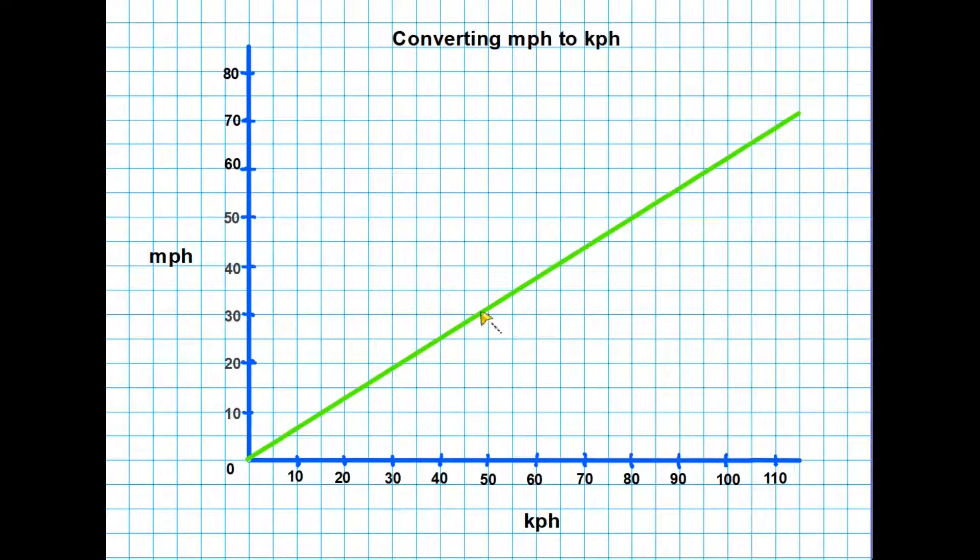And the whole key to this is the green line going through at the center here. The way we use this graph, well let's do an example. Let us say we are currently traveling maybe in Europe and we are traveling at 80 kilometers per hour. So to use this graph we simply take a line up from 80 as far as the green line that we have there. That is the conversion line there.